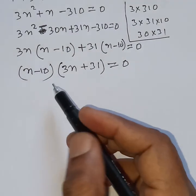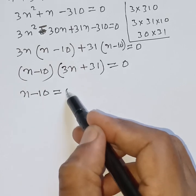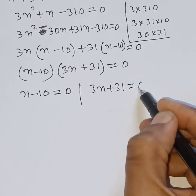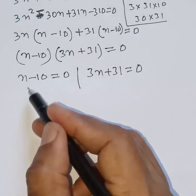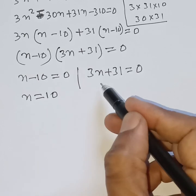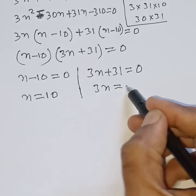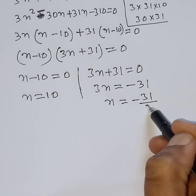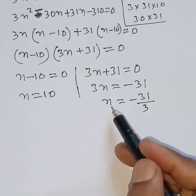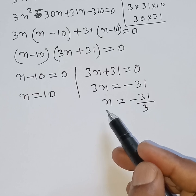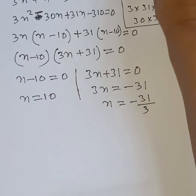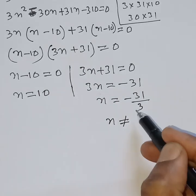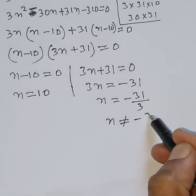According to the zero product rule, either n minus 10 equals 0, giving n equals 10, or 3n plus 31 equals 0, giving n equals minus 31 by 3. Since n is the number of terms, n cannot be negative, so we reject n equals minus 31 by 3.